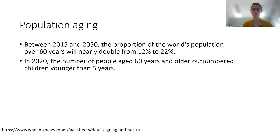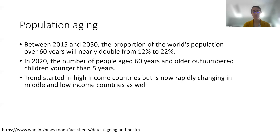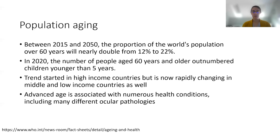We know that the global population is aging. Between 2015 and 2050, the proportion of the world's population who are 60 or older will nearly double. And in 2020, the number of people 60 years of age and older actually outnumbered children less than five years old. This phenomenon has been seen in high income countries, but we're starting to see this trend in middle and low income countries as well. Advanced age is also associated with a number of health conditions, and ocular pathology is amongst the list.